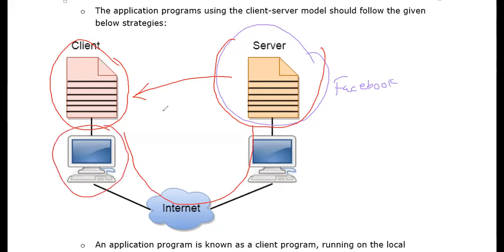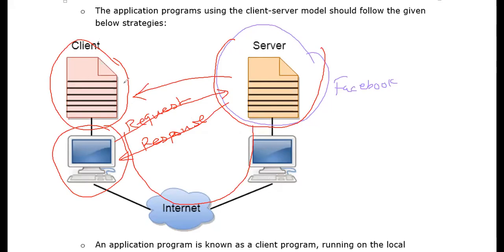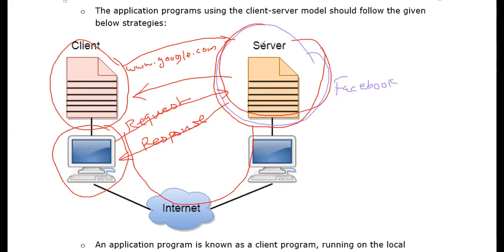How does the server work? When the client sends a request, the server sends back a response. For example, the client requests www.google.com. That request goes to the server. The server searches its location, finds the request, and sends back a response to the client.